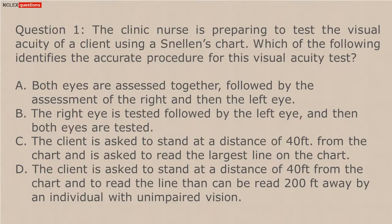The clinic nurse is preparing to test the visual acuity of a client using a Snellen's chart. Which of the following identifies the accurate procedure for this visual acuity test? A. Both eyes are assessed together, followed by the assessment of the right and then the left eye. B. The right eye is tested followed by the left eye, and then both eyes are tested. C. The client is asked to stand at a distance of 40 feet from the chart and is asked to read the largest line on the chart. D. The client is asked to stand at a distance of 40 feet from the chart and to read the line that can be read 200 feet away by an individual with unimpaired vision.